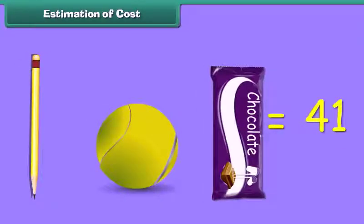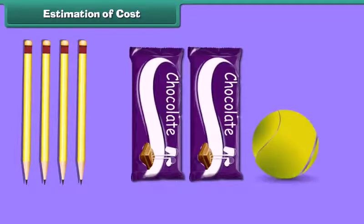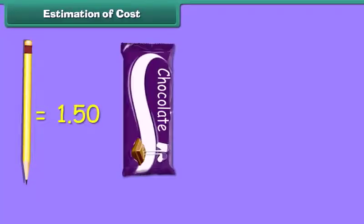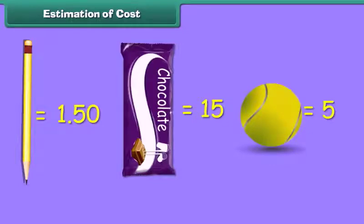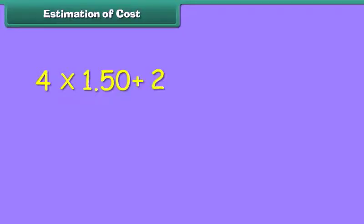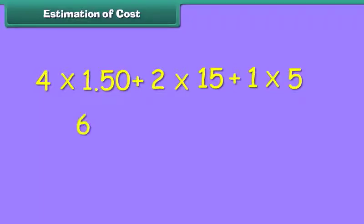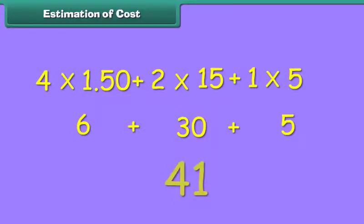Estimation of cost means calculating the total cost of different items. We understand it by taking an example. What will be the total cost of four pencils, two chocolates and one tennis ball? The unit cost of a pencil is 1 rupee 50 paisa, unit cost of chocolate is rupees 15, and tennis ball is rupees 5. We calculate total cost: 4 into 1.50 plus 2 into 15 plus 1 into 5, which equals 6 plus 30 plus 5, amounting to rupees 41. Thus, this is the estimated cost.